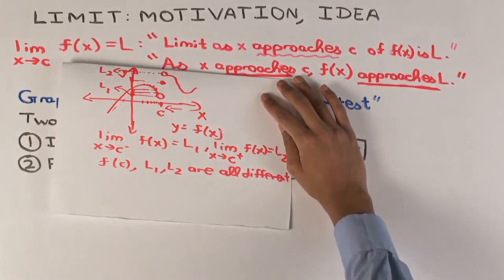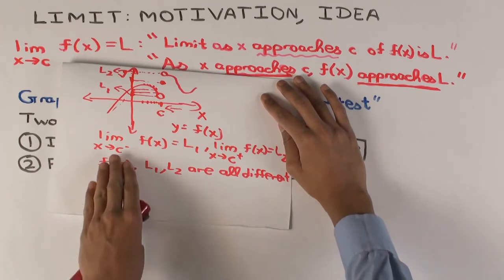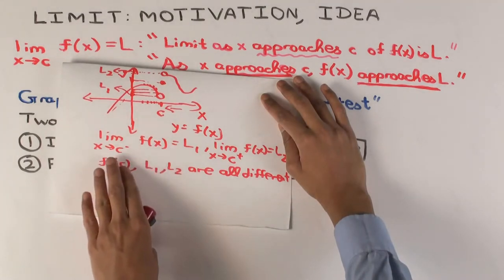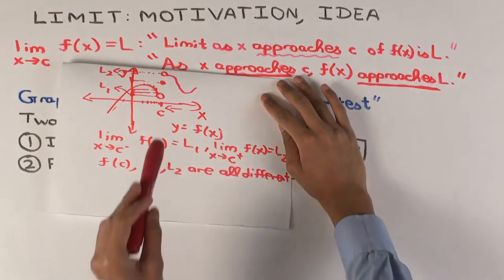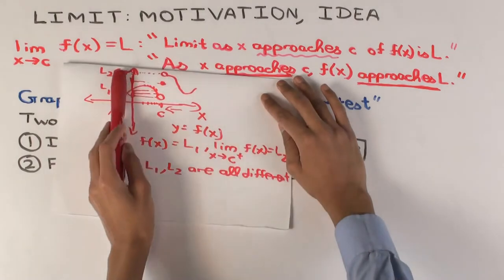What does this mean as far as the limit is concerned? The concept of limit is really a concept of two-sided limit, which means that in this case the limit as x approaches c of f(x) does not exist — because you have a left-hand limit and a right-hand limit and they are not equal to each other. The value f(c) doesn't matter here; the real problem is that the left-hand limit and right-hand limit are not equal.